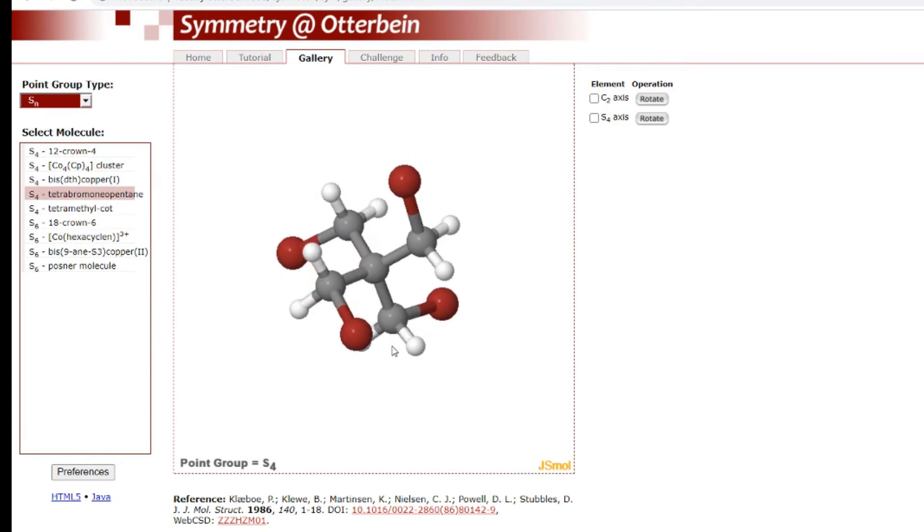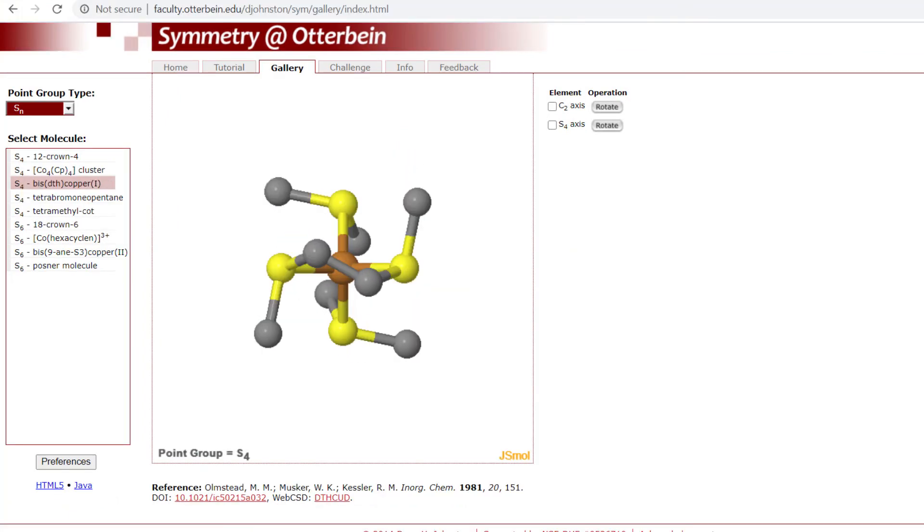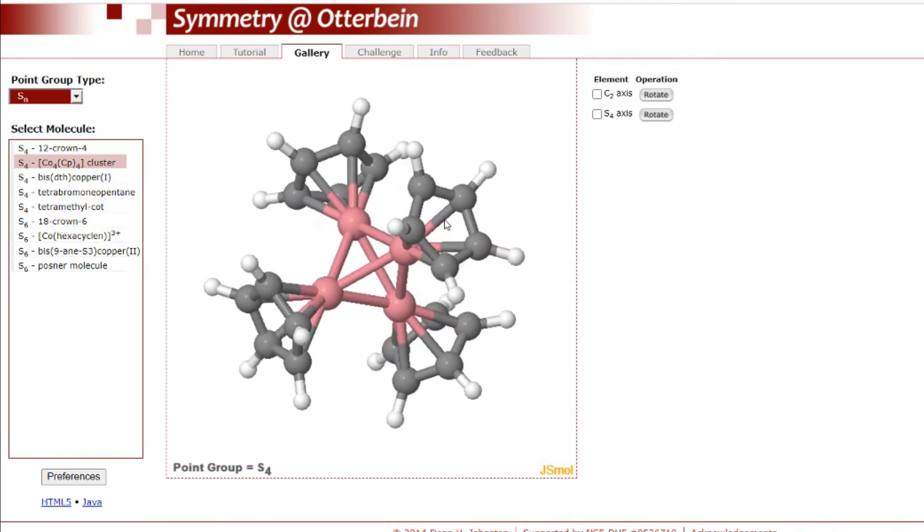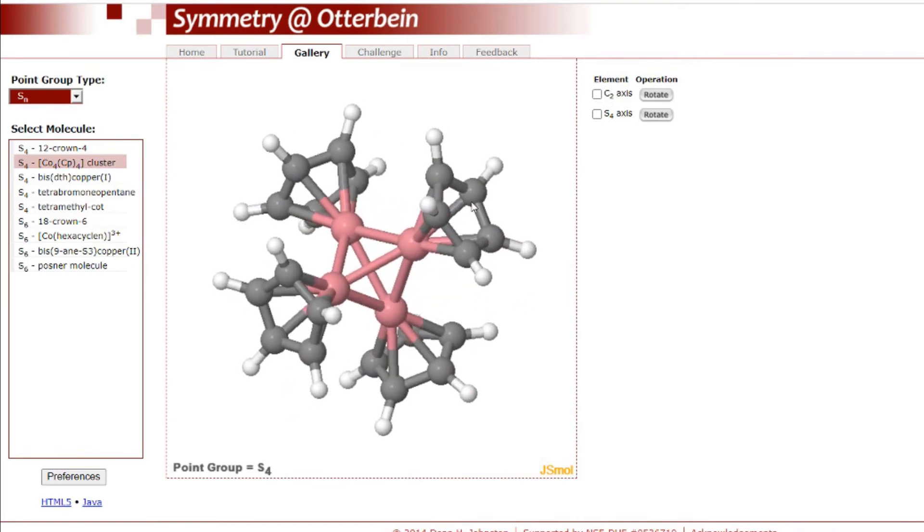So here is another example, tetrabromo-neopentane that matches with the common generic S2N shapes that we described. Two carbons are higher, two carbons are lower, and when you look from above you see bromines are arranged with sense of directionality. Then another similar example, there are other structure types that occur in S2N group. For instance here we have tetragonal cobalt cluster and four CP rings, and notice that the rings are rotated in such a way that there is no planes of symmetry but only S4. So that relative rotation of CP rings is a way of expressing directionality.